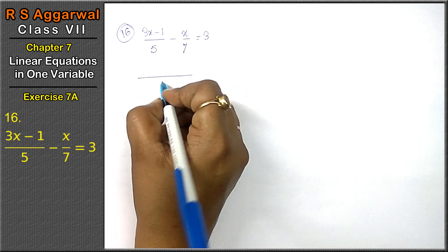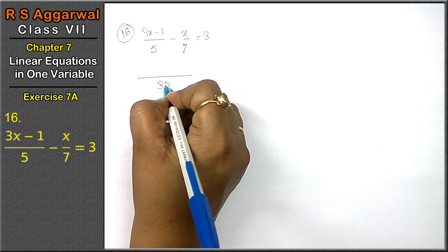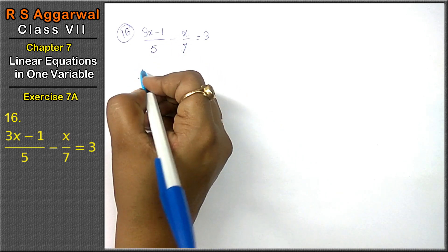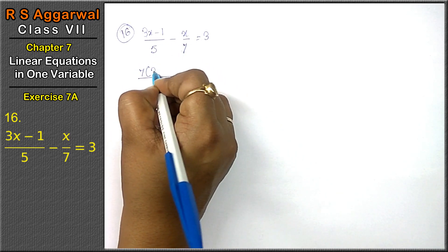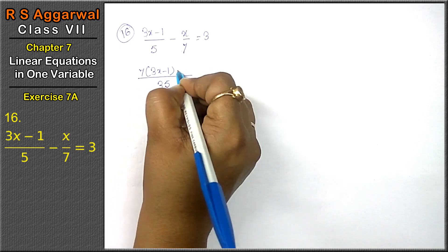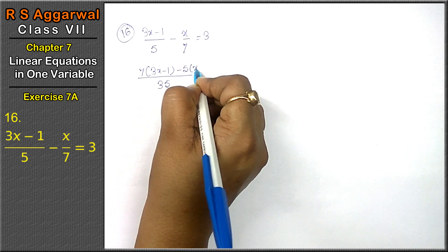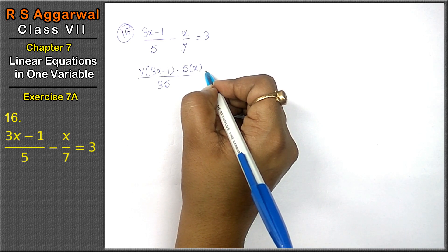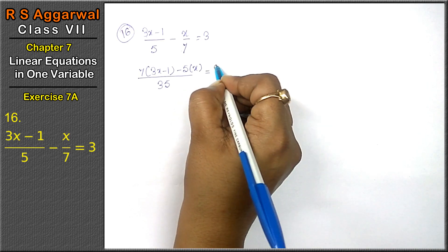We will take LCM. 7, 5 is 35. Now, 7's multiplication is this and 5's multiplication is this. That means 3x minus 1 minus 5 into x equals 3.